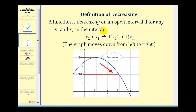A function is decreasing on an open interval if for any x sub one and x sub two in the interval, if x sub two is greater than x sub one, f of x sub two would be less than f of x sub one. So if x sub two is to the right of x sub one, f of x sub two would be below f of x sub one. So moving from left to right, the graph would move downward as we see here.